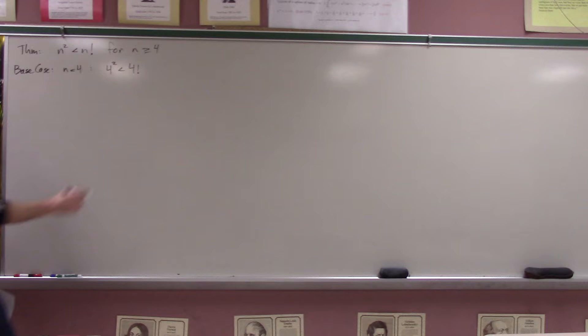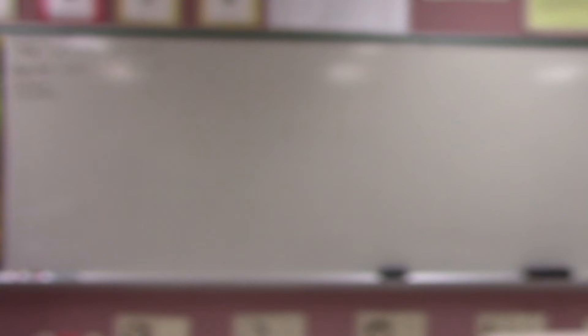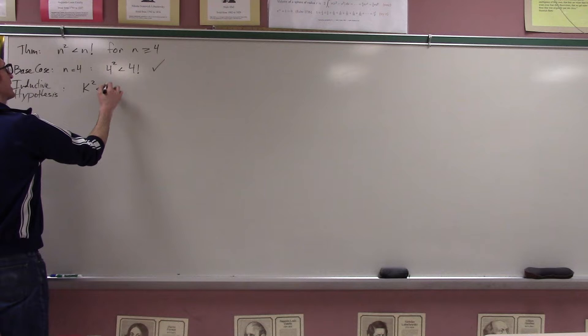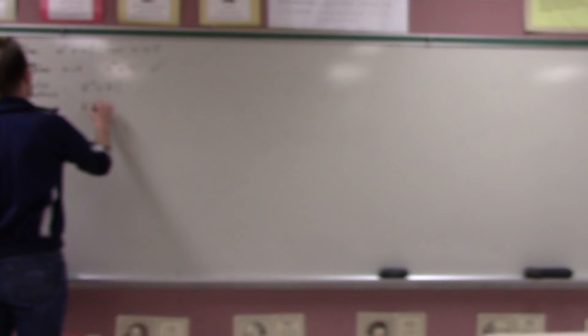Now we make our inductive hypothesis: assume this works for some number k. So k squared is less than k factorial for some arbitrary k, with k greater than or equal to 4. What I need to show is that (k+1) squared is less than (k+1) factorial.